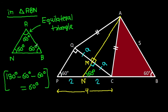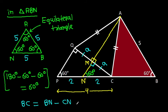And AB is 5, so AN will also be 5 and BN will also be 5. And BC equals BN minus CN equals 5 minus 2 equals 3. So BC is 3.